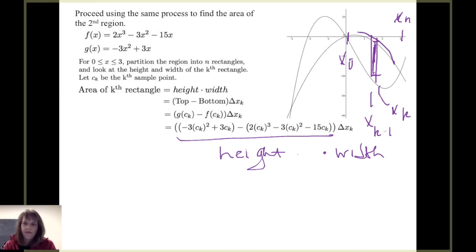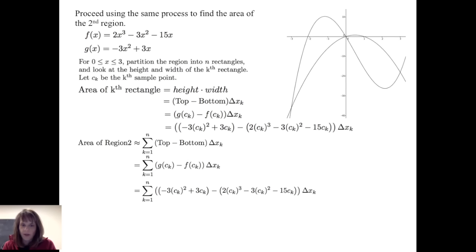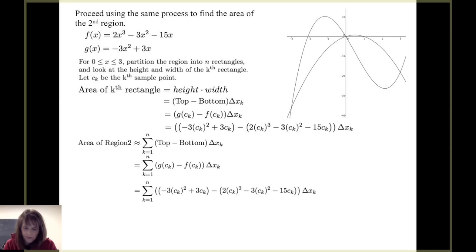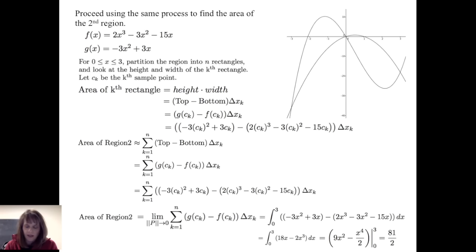I've partitioned the region and found the area of one rectangle — the kth rectangle. To approximate the area, I sum the areas of the n rectangles, summing k from 1 to n of height times width. Each rectangle has an area figured out the same way: function g minus function f evaluated at a sample point, times the width delta x sub k. Taking the limit as the number of rectangles goes to infinity and the norm of the partition goes to 0, I get the definite integral from 0 to 3 of (negative 3x² plus 3x) minus (2x³ minus 3x² minus 15x) dx.